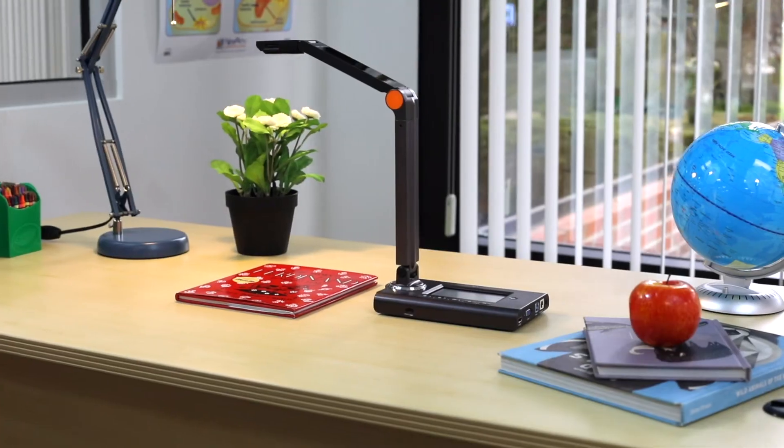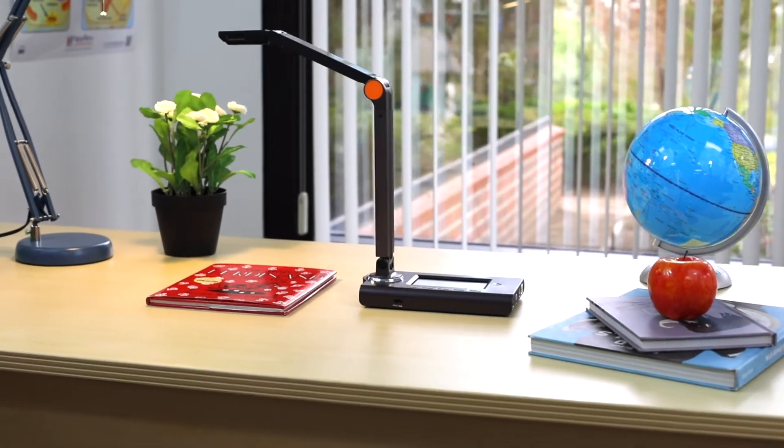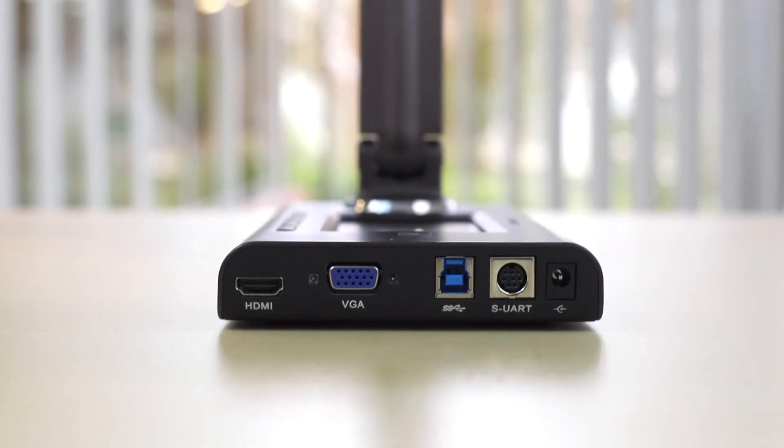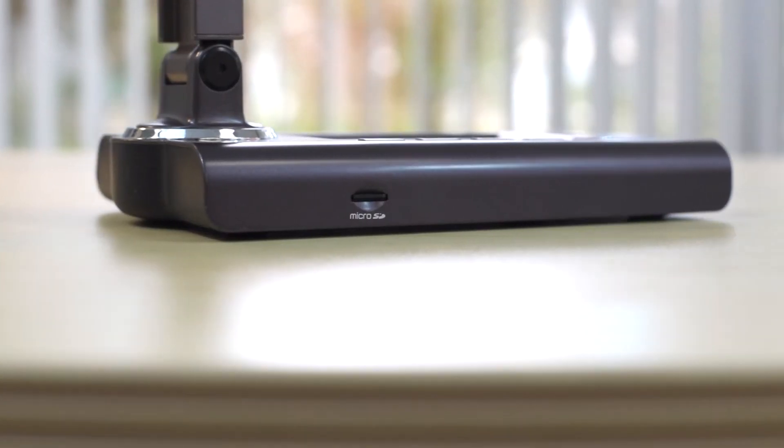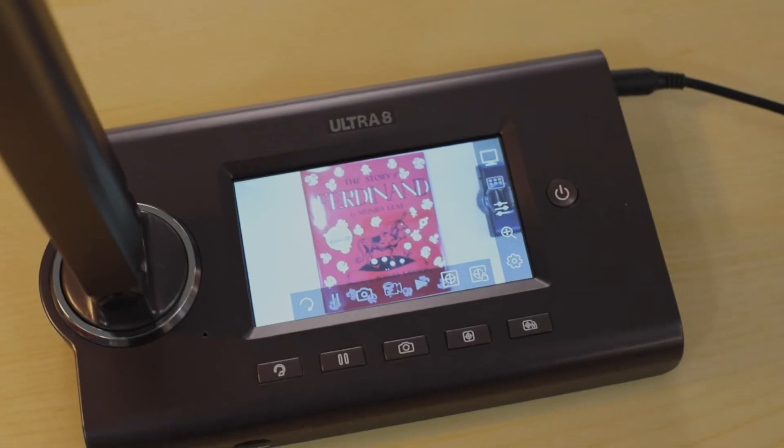But wait, what if there was a true standalone document camera that had the connectivity of the MXP, yet allowed you to record lessons right onto the camera? Well, there is. The Hovercam Ultra 8 not only has USB, HDMI, and VGA outputs, but it can also record lessons locally right onto its SD card. Did I mention that it has a built-in touchscreen?